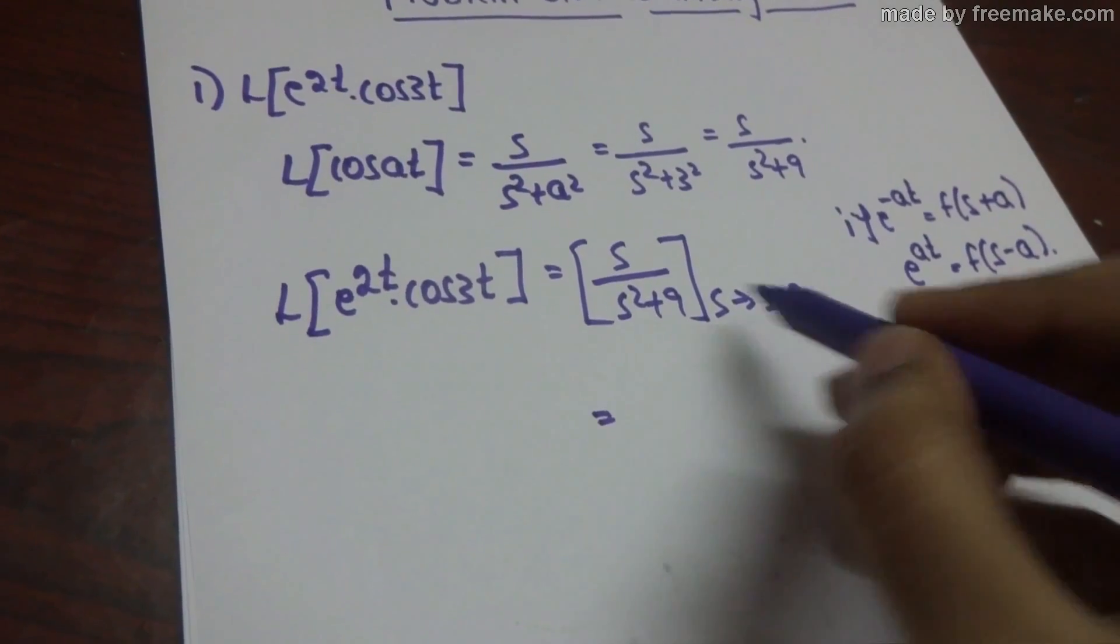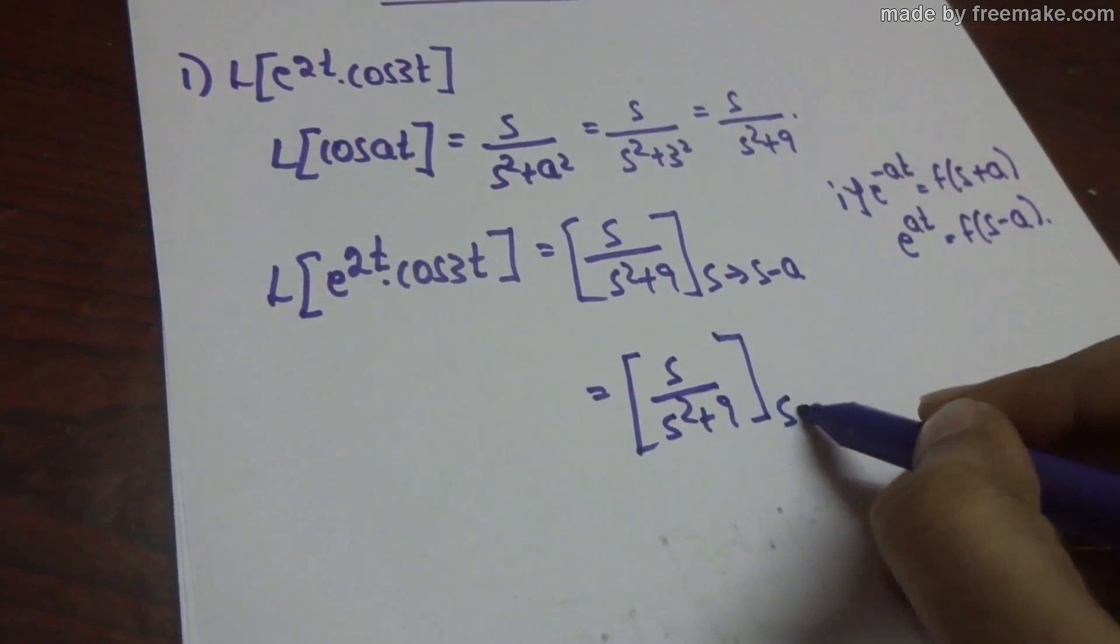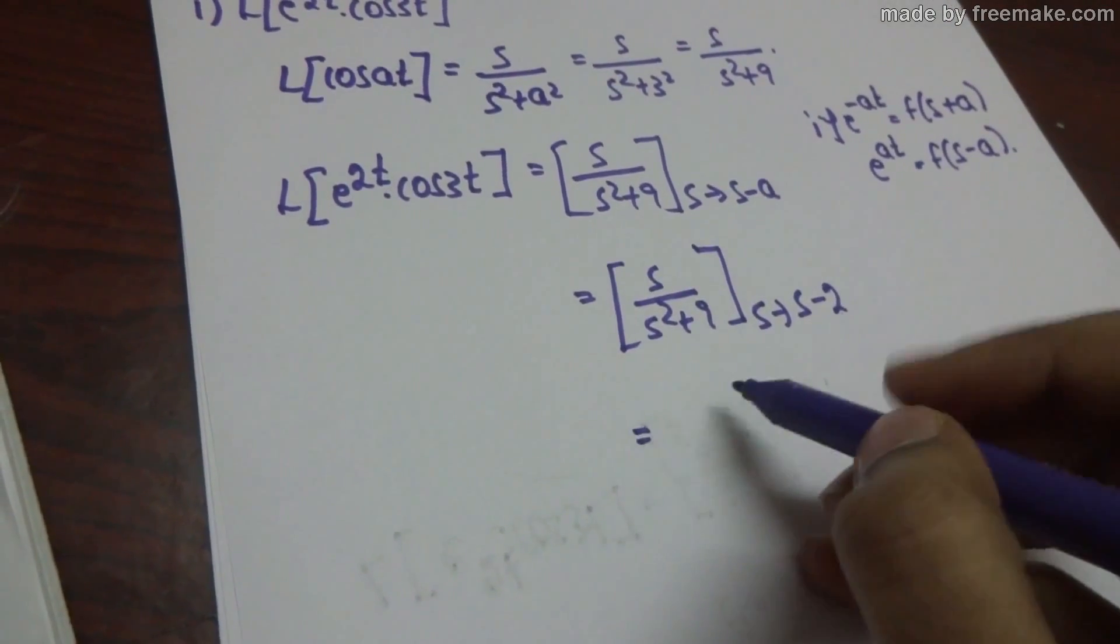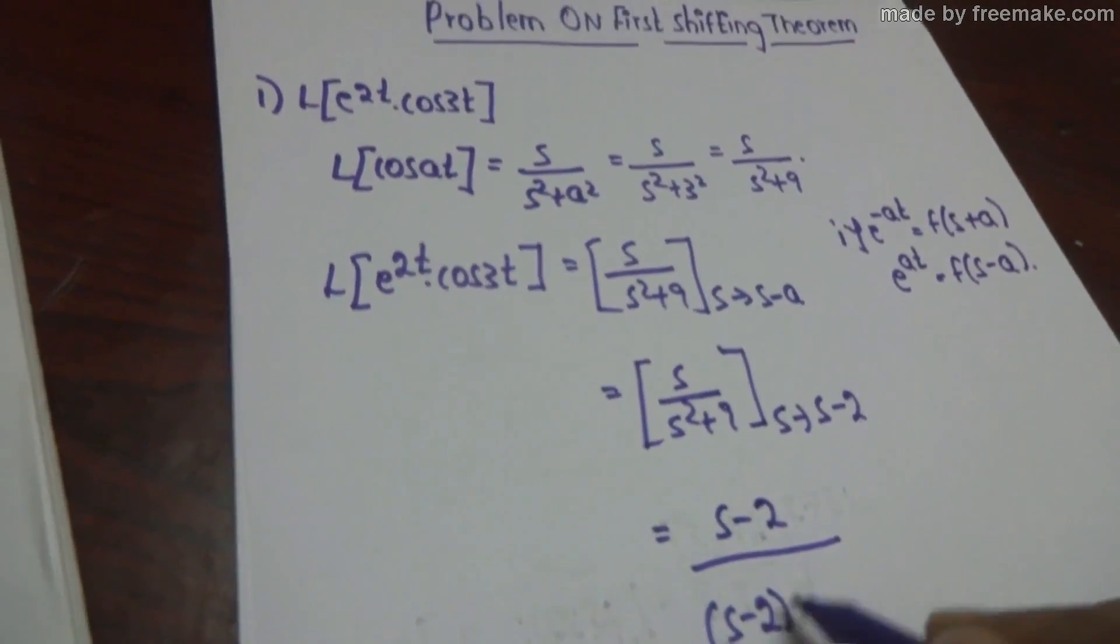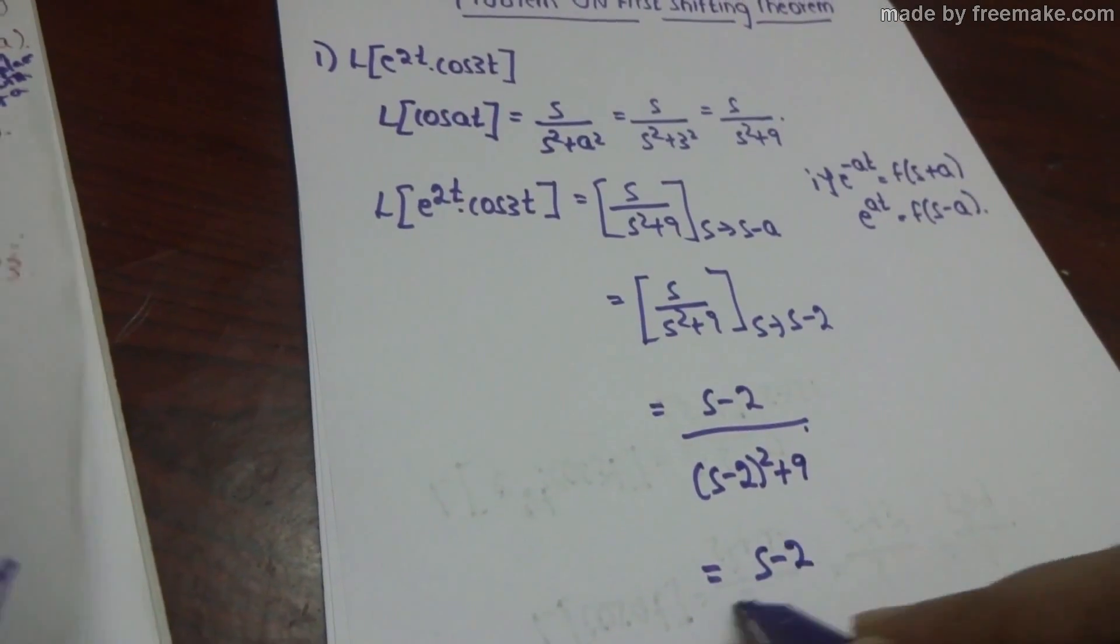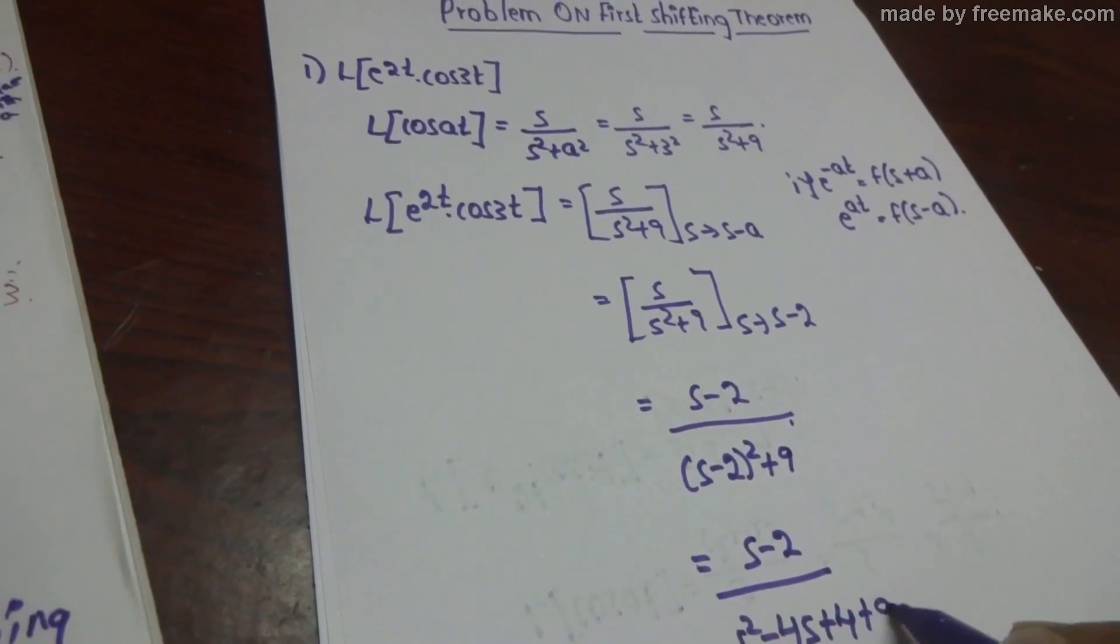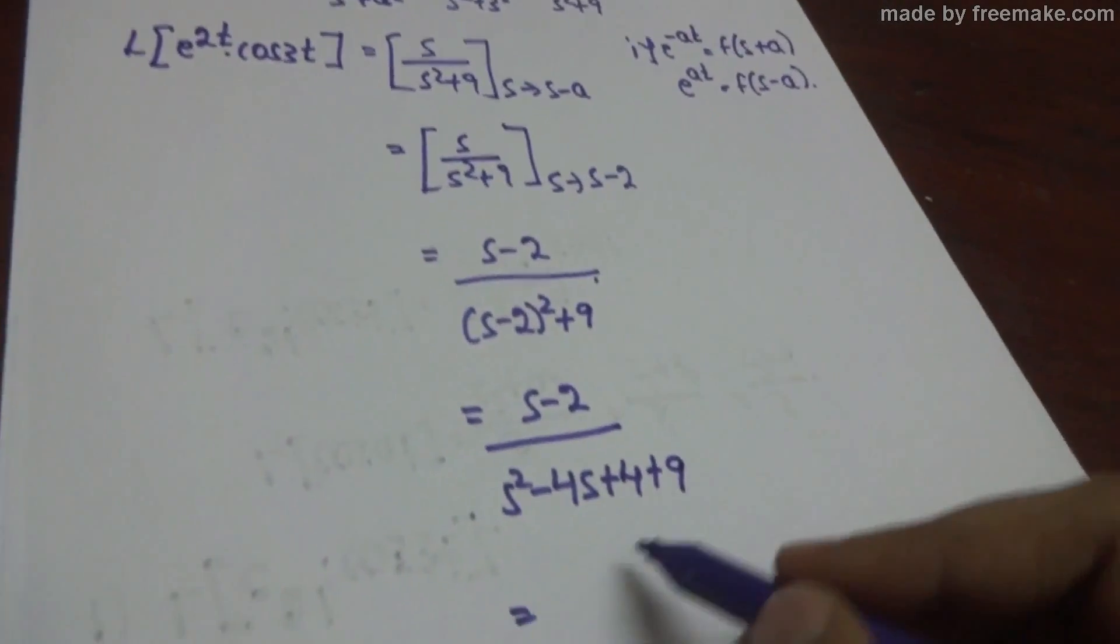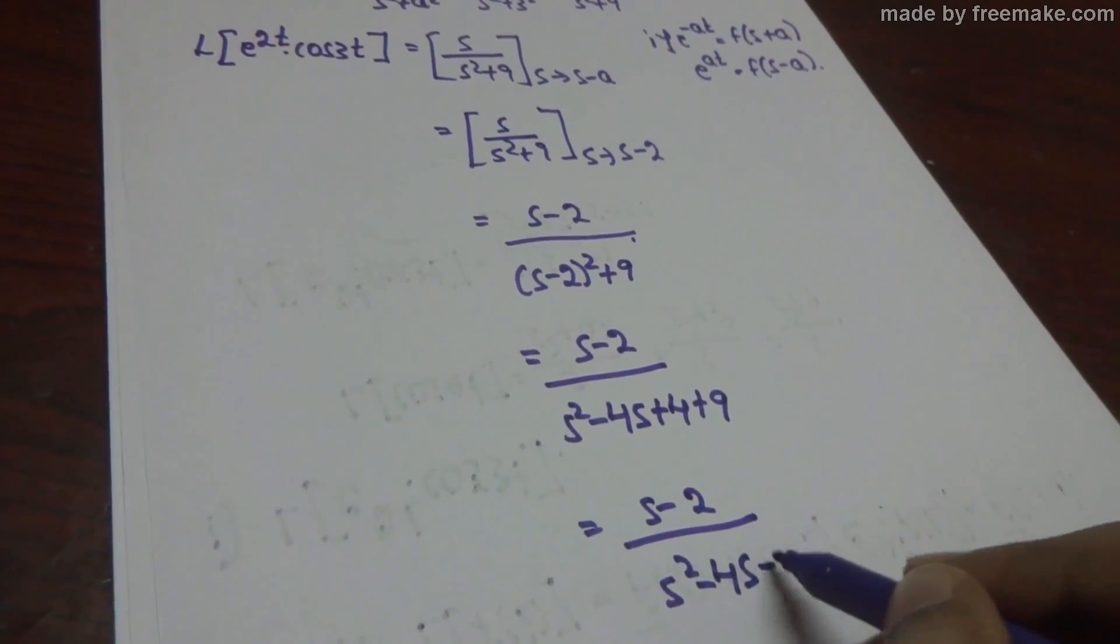Here a is 2. So s/(s^2 + 9), here s minus 2. So (s - 2)/((s - 2)^2 + 9) is equal to (s - 2)/(s^2 - 4s + 4 + 9). That is (s - 2)/(s^2 - 4s + 13).